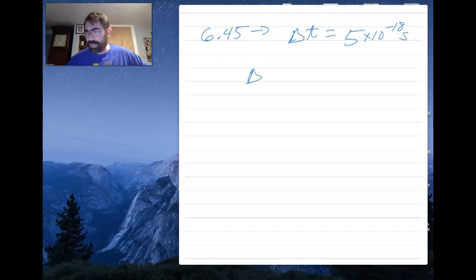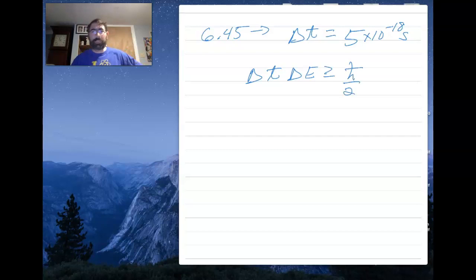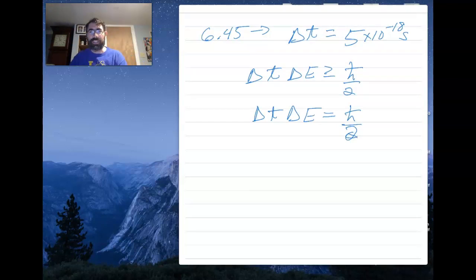Well, if I apply the uncertainty principle, delta t and delta E are greater than or equal to h bar over 2. We want the minimum one, so we're going to take the equal sign and we get h bar over 2.